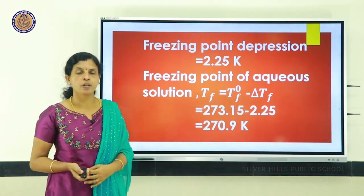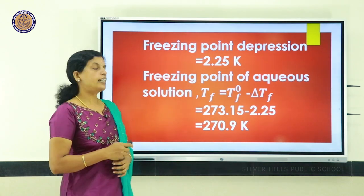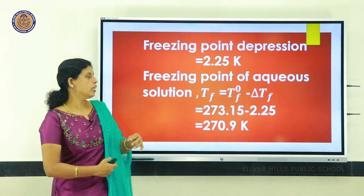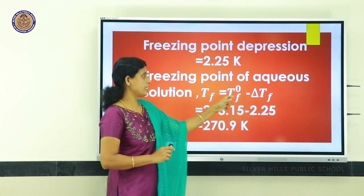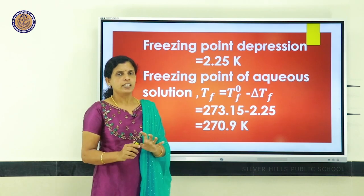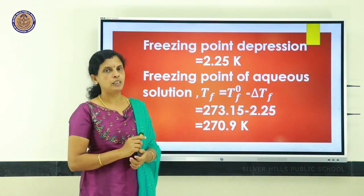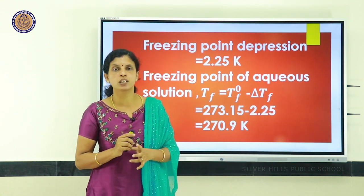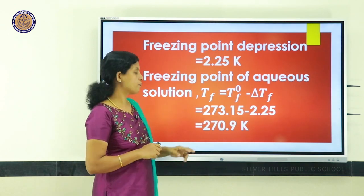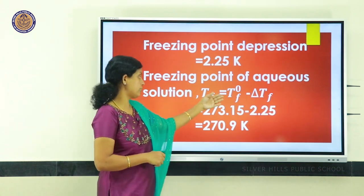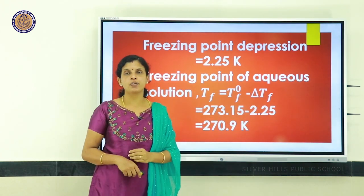The second part asks to calculate the freezing point of solution. Using Tf = Tf⁰ − ΔTf, the solvent is water, so Tf⁰ = 273.15 K. Since ΔTf = 2.25 K, the freezing point of solution Tf = 273.15 − 2.25 = 270.9 Kelvin.